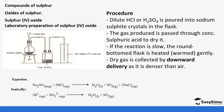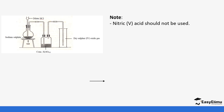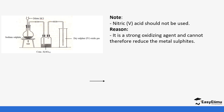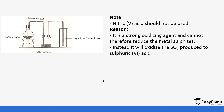Nitric acid is not used in this experiment because it is a very strong oxidizing agent. Instead of reducing the metal sulfite, it would oxidize the sulfur dioxide produced to sulfuric acid, while itself being reduced to nitrogen dioxide. So the reaction between nitric acid and sulfur dioxide would form nitrogen dioxide and sulfuric acid — which is why we avoid it.